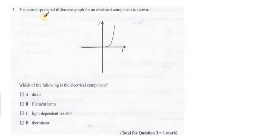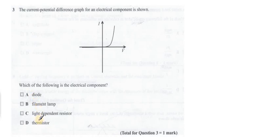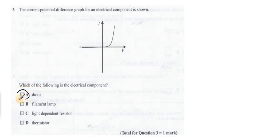Question number 3: the current and potential difference graph for an electrical component is shown. Which of the following is the electrical component? The options are diode, filament lamp, light dependent resistor, and thermistor. In this IV graph, initially at some voltage there is no current, but as you increase the voltage, current starts increasing rapidly. This is the behavior of a diode. So the option is A.